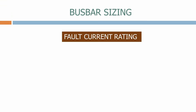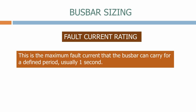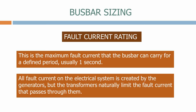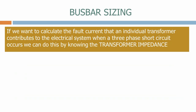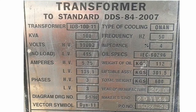The other main element we use to define busbars is the fault current rating. This is the maximum fault current that the busbar can carry for a defined period, usually one second. All fault current on the electrical system is created by the generators, but the transformers naturally limit the fault current that passes through them. Here's a rating plate for a 100 kVA, 11000 to 415 volt transformer. For this transformer the impedance is 4%.